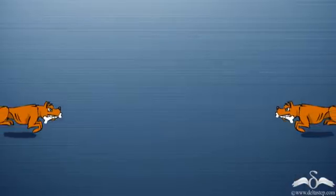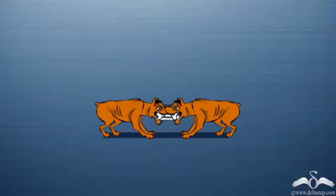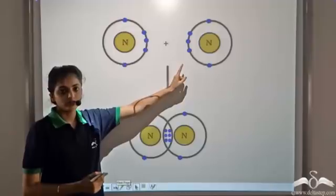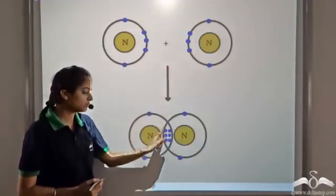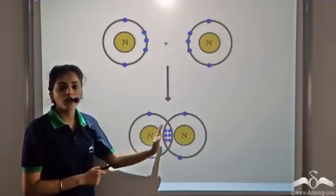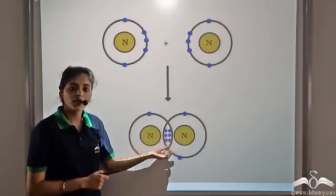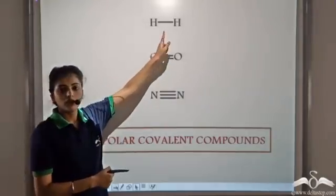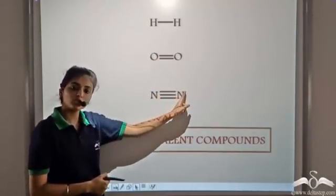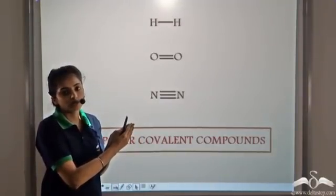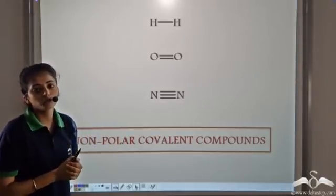But what happens if the two dogs who are fighting have equal strength? Nobody lets the other one pull the bone more towards itself. So even in atoms, when the two atoms have equal electronegativity, nitrogen combining with another nitrogen atom forms a covalent compound, but both nitrogen atoms have equal electronegativity. So there is no charge separation as they equally share the shared pair of electrons. Such covalent compounds are known as non-polar covalent compounds. For example, H-H, O-O, and N-N — in these the shared pair of electrons are equally shared between the two atoms with no charge separation.